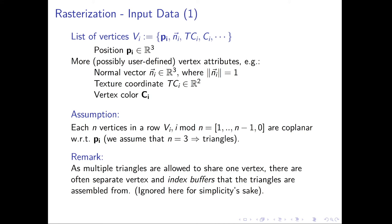The input to the rasterization algorithm on a higher level are polygons. In line with how graphics APIs behave, the input is actually a list of vertices, where every three vertices form a triangle. Each vertex is comprised of a vertex position — a tuple in R3 — and possibly other user-defined vertex attributes stored with the vertex.